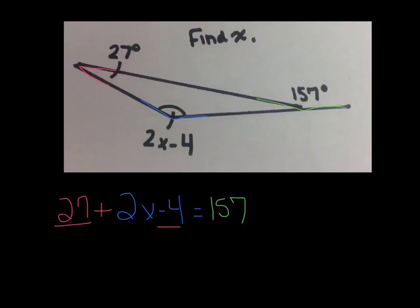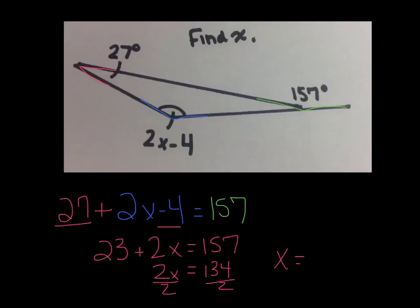We've got 27 minus 4. That's 23 plus 2X equals 157. Now I can take 23 away from both sides. And when I do that, I end up with 134 equal to 2X. And when I divide both sides by 2, we find out that X is equal to 67 degrees.